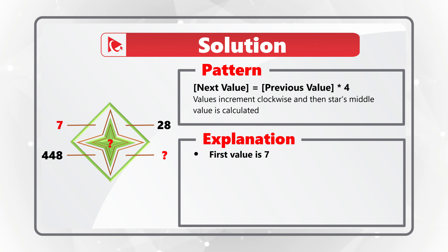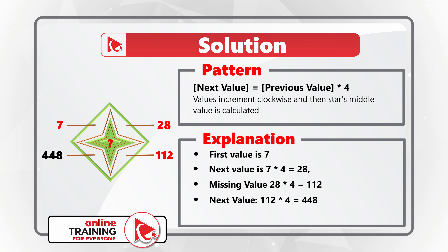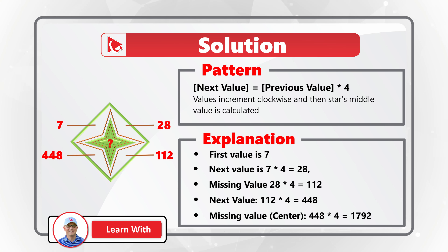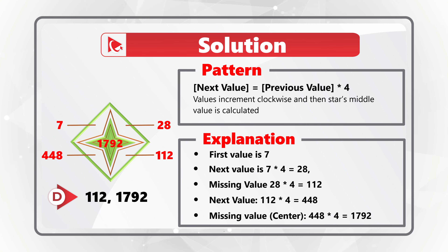The first value at 11 o'clock is 7. The next value is 28, calculated as 7 multiplied by 4. The missing value at 5 o'clock is 28 multiplied by 4, which equals 112. The next value at 8 o'clock is 112 multiplied by 4, which equals 448. The missing center value is 448 multiplied by 4, which equals 1792. So the correct answer is Choice D: 112 and 1792.